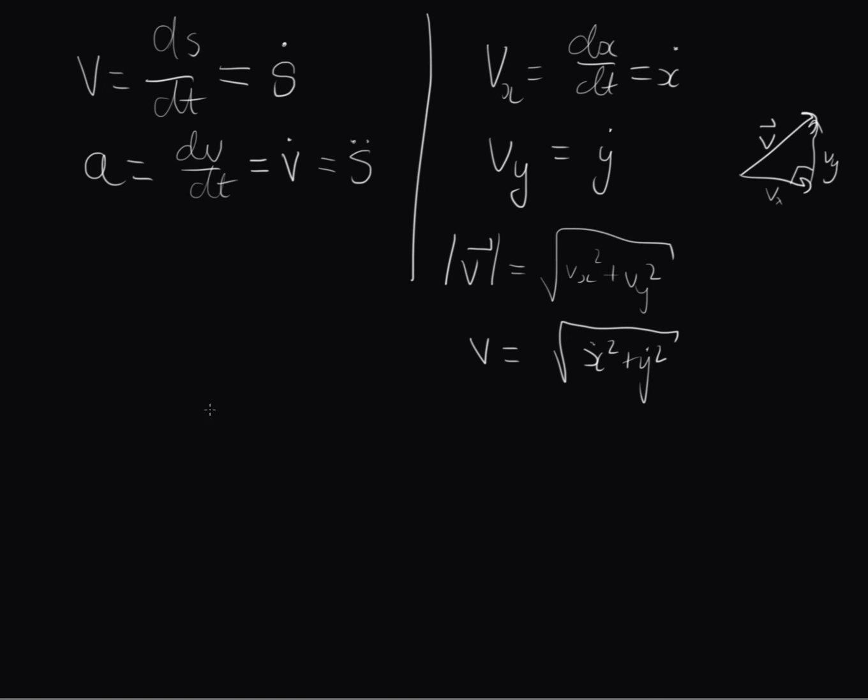It's because we write our kinetic energy K is equal to a half m v squared. However we want to write it in terms of the derivatives of our position. It's best when you're working with Lagrangians to try to limit yourself to as few variables as possible. You can also write this as a half m and then square root of x dot squared plus y dot squared all squared. Square roots cancel out and we get K is equal to a half m bracket x dot squared plus y dot squared.